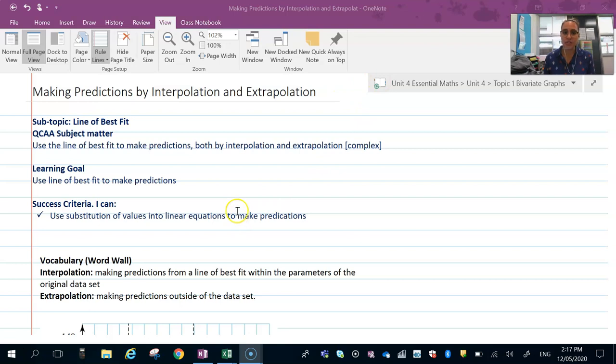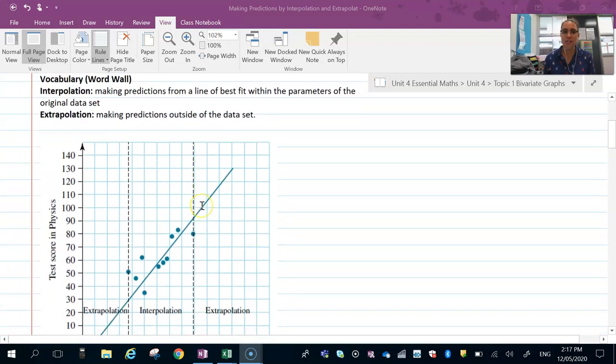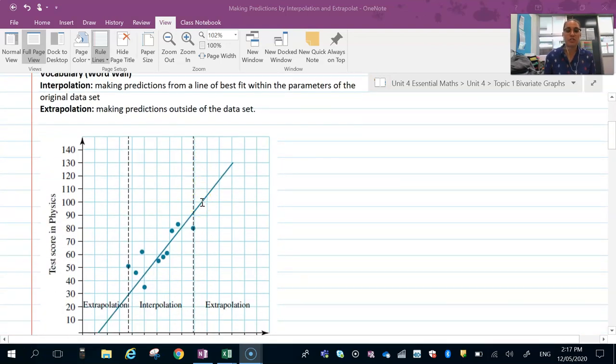Let's have a look at interpolation. Interpolation is when we have a scatter graph and put our line of best fit on. As long as we work within the lowest point and the highest point, we are interpolating. Normally that's where we want to work because the line represents the data that's been given to us, the original data set.